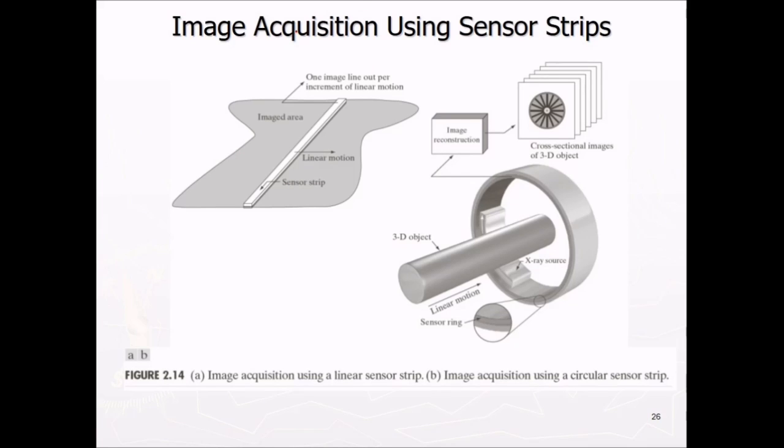This is image acquisition using a linear sensor strip. And this particular is image acquisition using circular sensor strip. This is linear, this is circular. So what is done is, this is one image line out per increment of line motion. This is the image area. This is the linear motion. It sweeps, it covers all of them. What energy it gets from the ground or any other refractive material. And in this, these are the cross sectional images of the 3D object. This is the linear motion. And this is the 3D object. And this is the sensor ring.